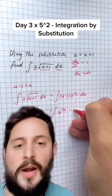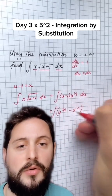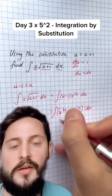I'll then just expand the brackets so that I get u to the 3 over 2 minus u to the half being integrated with respect to u.